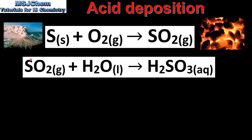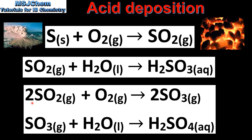The sulfur dioxide can then react with water to form H₂SO₃, which is sulfurous acid. Alternatively, the sulfur dioxide can react with molecular oxygen to form sulfur trioxide, and the sulfur trioxide can react with water to form sulfuric acid.